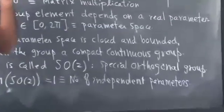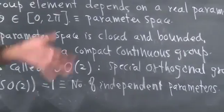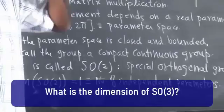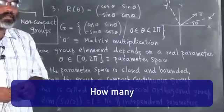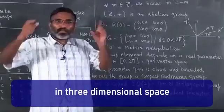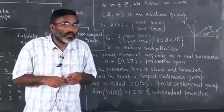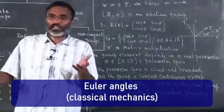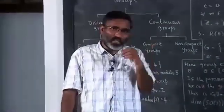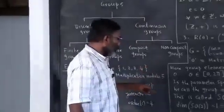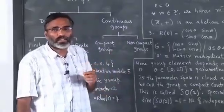If you take rotations in three-dimensional space, that is called SO(3). How many parameters are there? Three parameters. What are those parameters? Euler angles. From classical mechanics, you may recall that Euler angles determine any arbitrary rotation in three-dimensional space. So the three Euler angles are the independent parameters, and the dimension of SO(3) is 3.